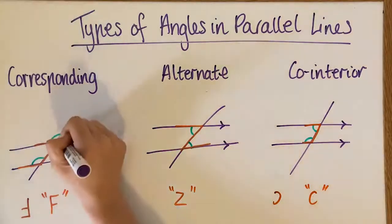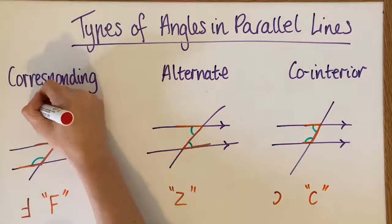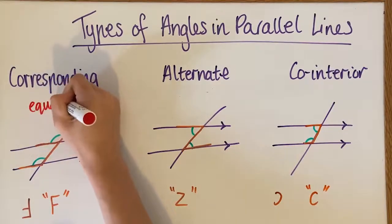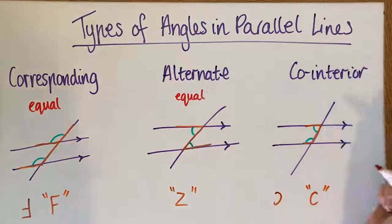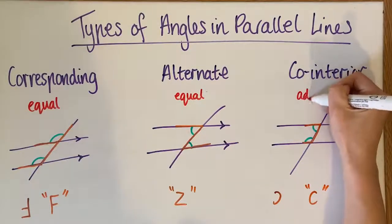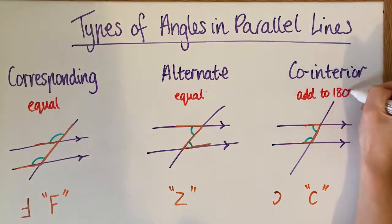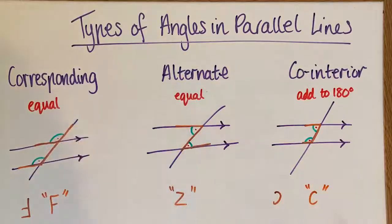Now, corresponding angles are always going to be equal in size. Alternate angles are equal in size. Co-interior angles are not equal in size; they have to add to 180 degrees. So this angle and this angle make up 180, whereas these are the same and these are the same. So they are the three types of angles in parallel lines.